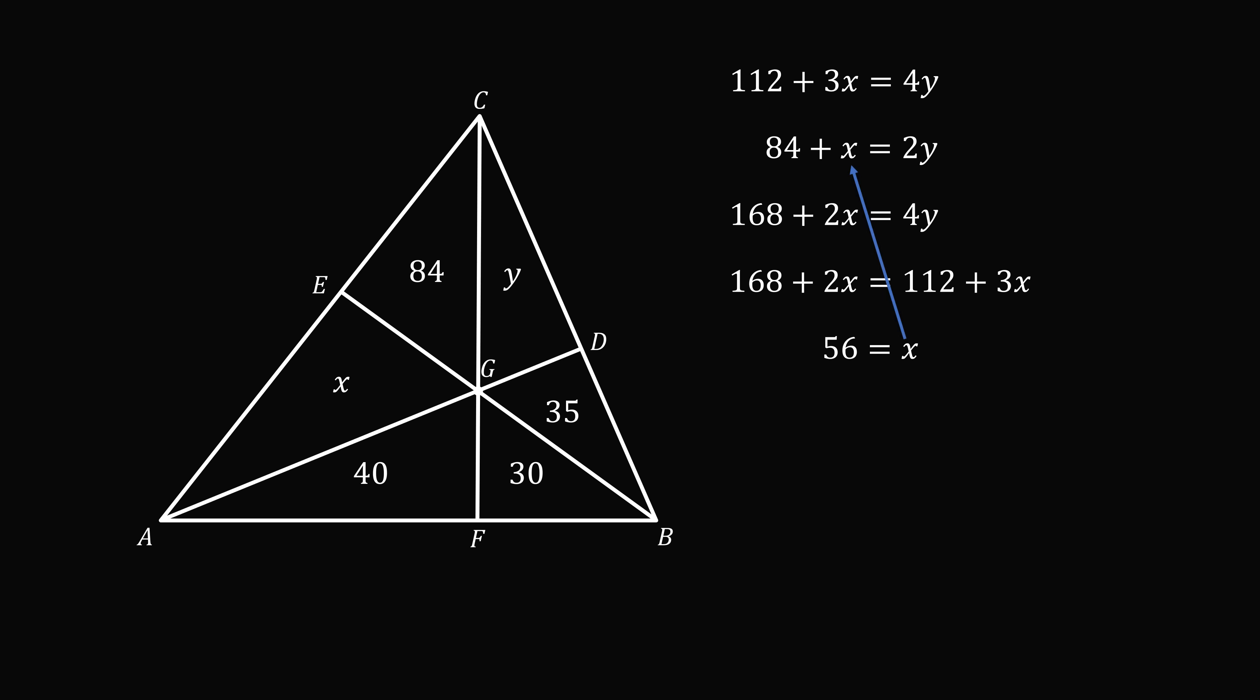We can then substitute this into the second equation. And we get 84 plus 56 equals 2y. And simplifying will give that y equals 70.